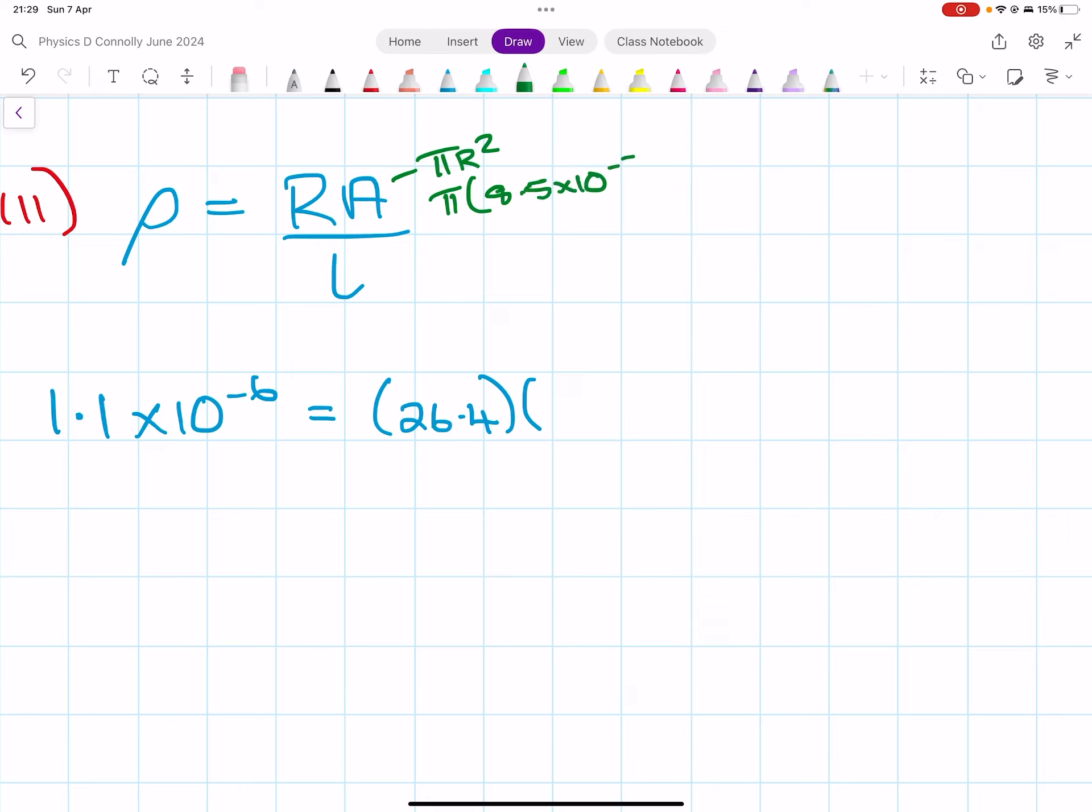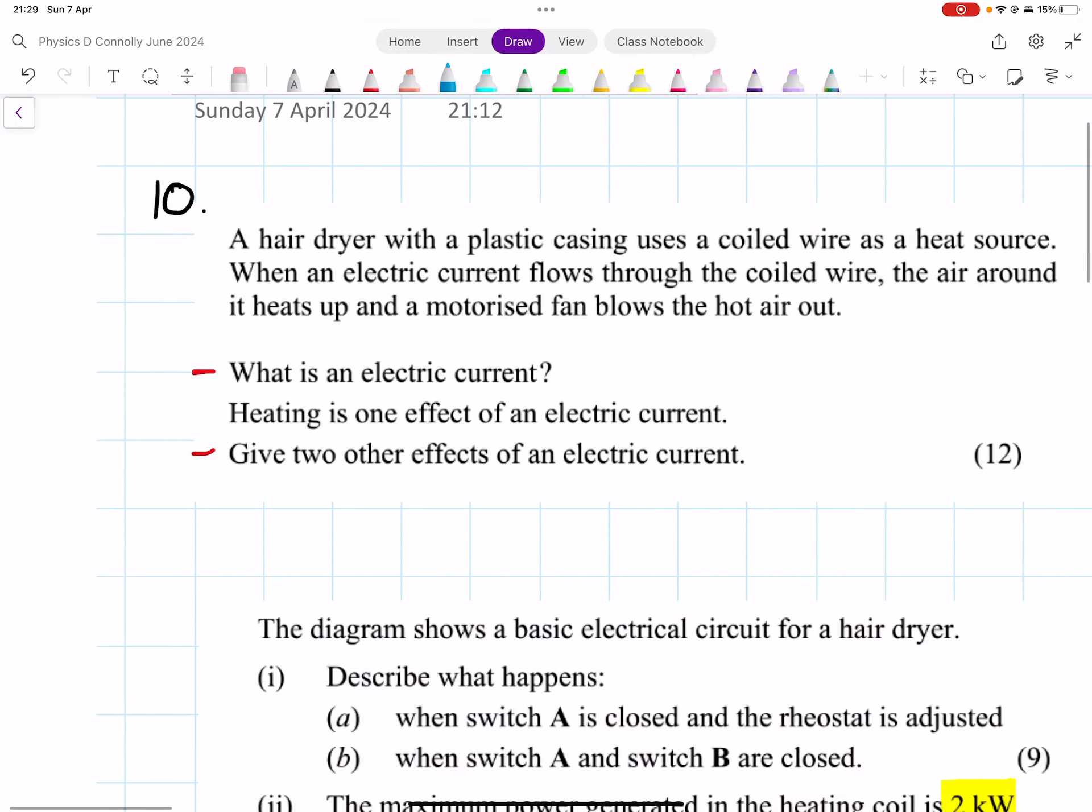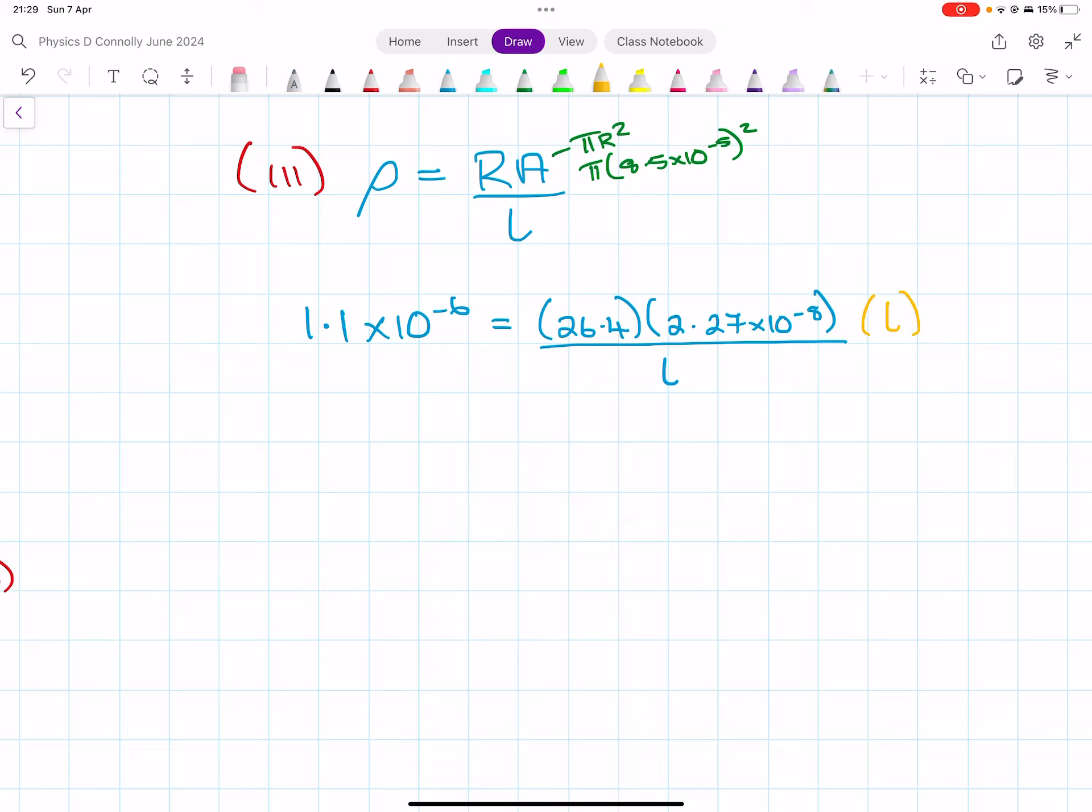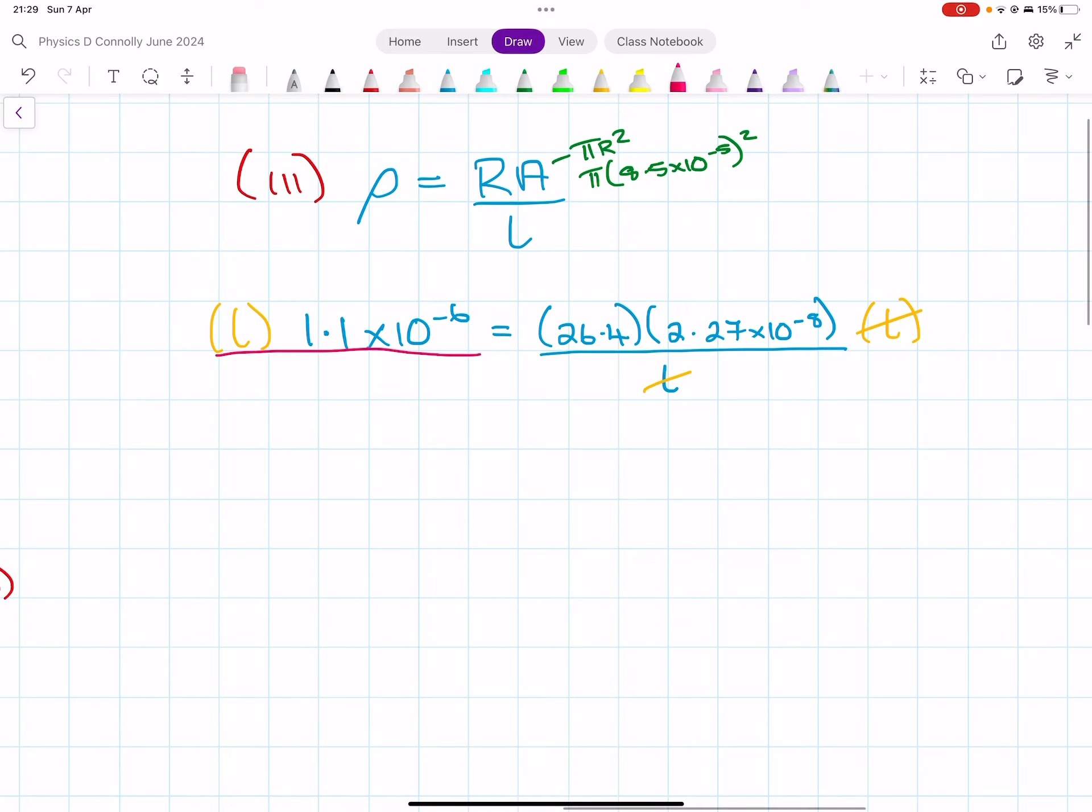Now the area. So the area is going to be pi r squared. It's going to be pi by that number, which was 8.5 by 10 to the minus 5 squared. So I'm going to square that and multiply it by pi. So I get 2.27 by 10 to the minus 8 over the length. Calculate the length—it's my only variable. Multiply by length to cancel it out, then divide by 1.1 by 10 to the minus 6. So we get length equals that multiplied by 26.4 divided by 1.1 by 10 to the minus 6.